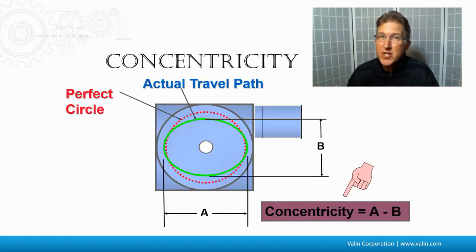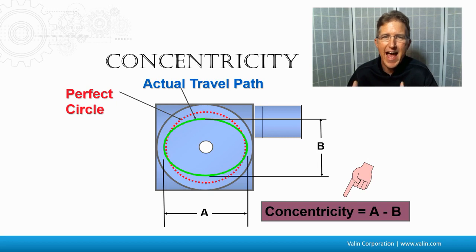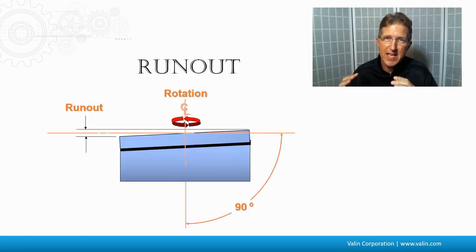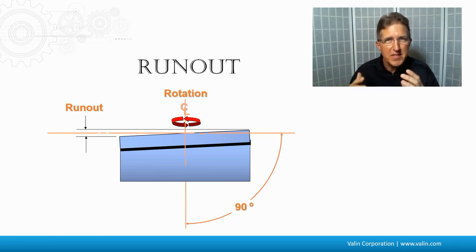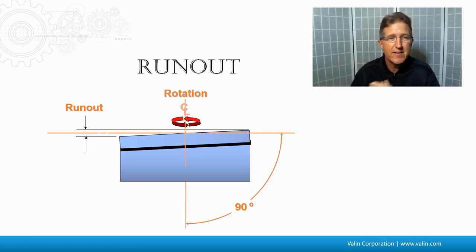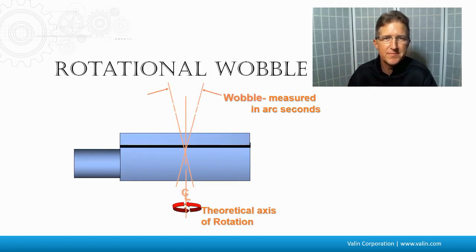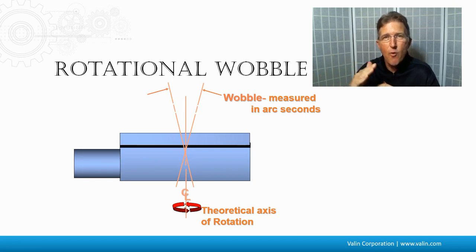When we're looking at rotational stages and rotary axes, there's concentricity. The red circle shows the perfect circle, but the green one is the actual travel path — the difference between the two is the concentricity. And run out: if you're looking at that same rotational stage from the side, it may not be perfectly flat — nothing is perfect — so it has some run out as it rotates, meaning a change in vertical position as it goes around the circle. It's also going to have some wobble back and forth as it goes around.